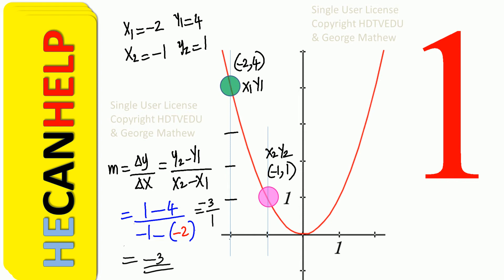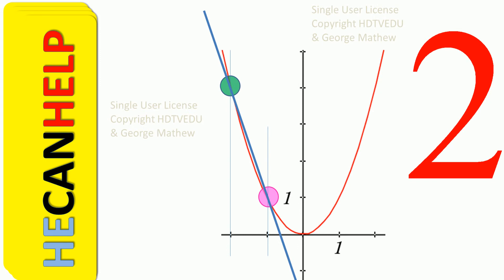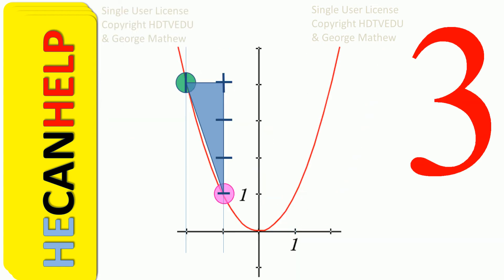Our slope is negative. When you go from left to right along the horizontal, what happens to our point? Let's call this the final, and this the initial. When we go from left to right along the horizontal, we see a fall. So slope is negative. It is rise over run — instead of rise, we have a fall. The fall is negative 3. So slope is negative 3 over 1, and that is negative 3.